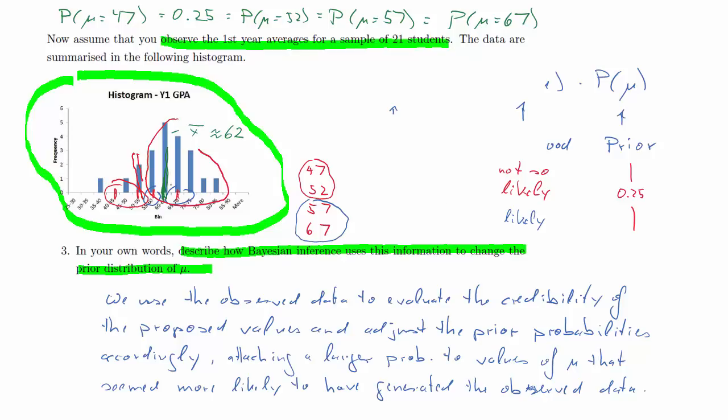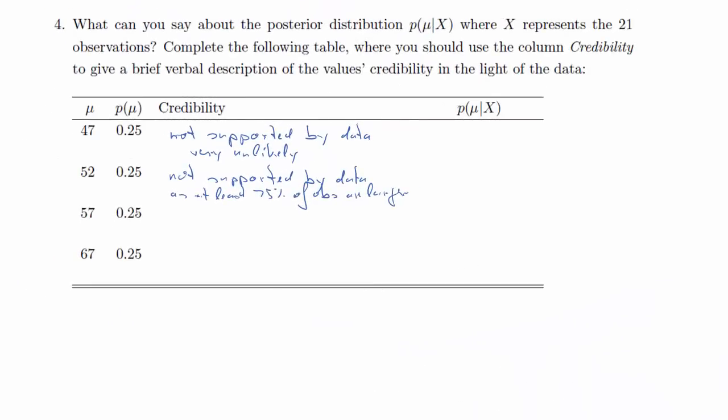Now the other two values 57 and 67, so here and here. Now both of them sort of look equally credible. So 57 and 67, they are really quite credible alternatives, certainly the most credible alternatives of our four values. So what does that mean for the posterior?